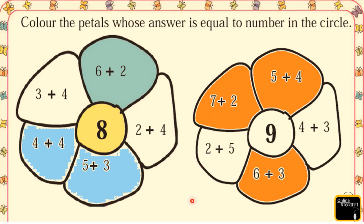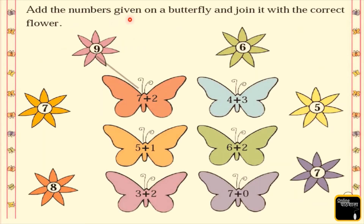Now we have another question — let's move on. Add the numbers given on a butterfly and join it with the correct flower. We have different colored flowers and some butterflies. Numbers are written on each butterfly and we have to add them together, find the answer, and join it to the matching flower. 7 plus 2 is equal to 9 — question 1 is done for you.